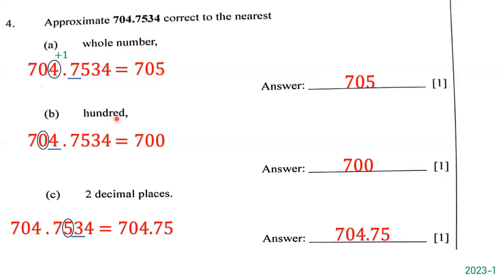Now we want to approximate 704.7534 correct to the nearest hundred. The number in the hundreds place is 0, so we circle 0 and underline the number to its right, which is 4. Since 4 is less than 5, we do not round up — it stays the same. The 4 becomes 0 and we drop the decimal part, so the answer is 700.